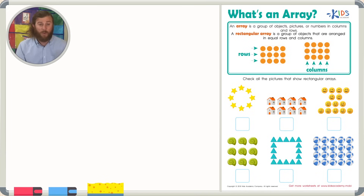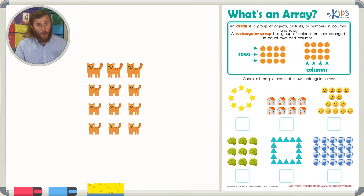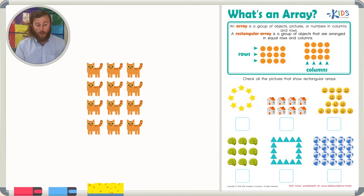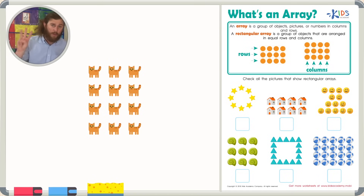An example of a rectangular array would be if we had pictures of cats. And we had three cats in the first row — that would mean we would also have three cats in the second row, three cats in the third row, and three cats in the fourth row. We can make as many rows as we want, as long as there are three in each row, because that's how we've created our array.